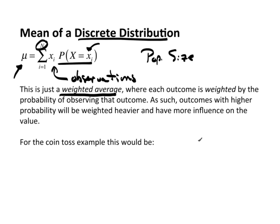Now, the idea behind that is obviously that outcomes with higher probabilities will have a heavier weight to it. So it has more influence on the final outcome.